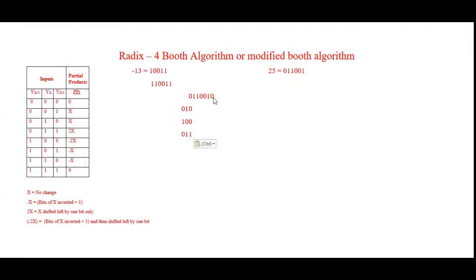Now I have to group the bits of 25 into groups of 3, starting from the LSB. The first group is 010. For the next group I carry over the first bit of the previous group, giving 100. The last group is 011. So I have made three groups.